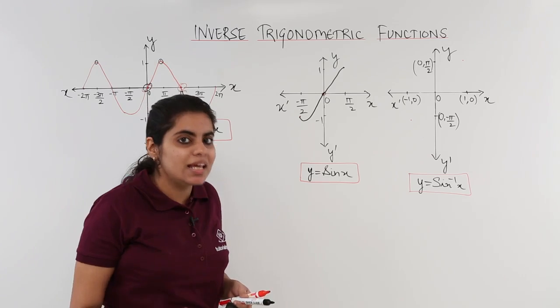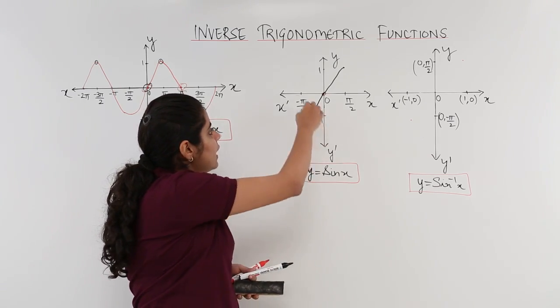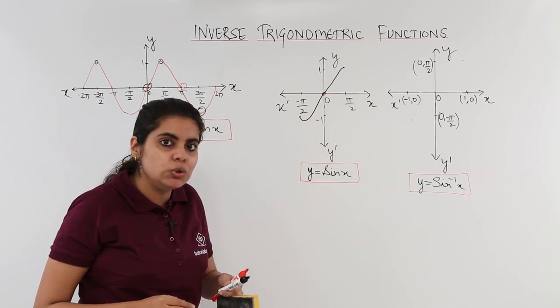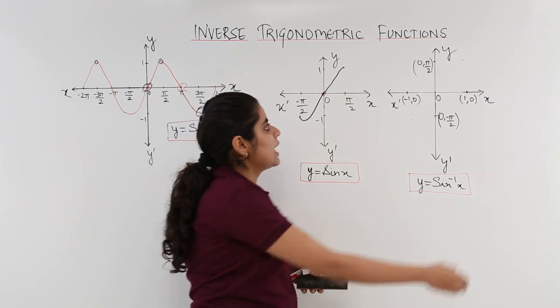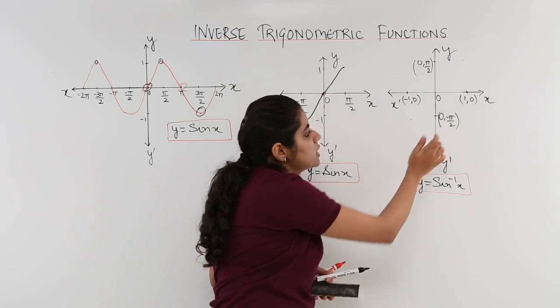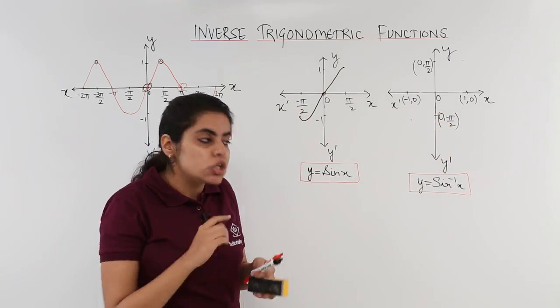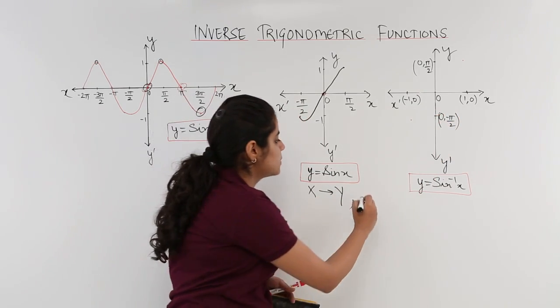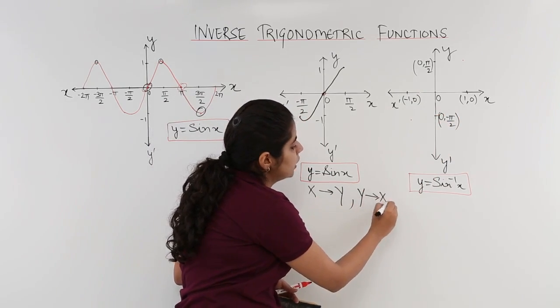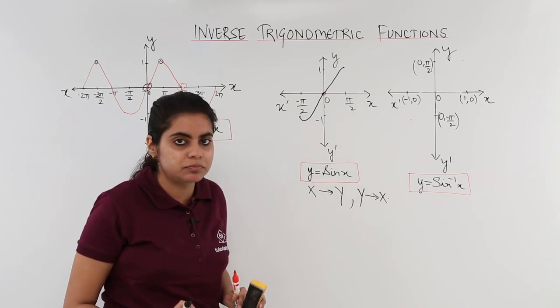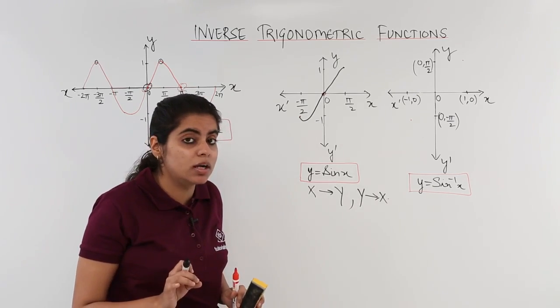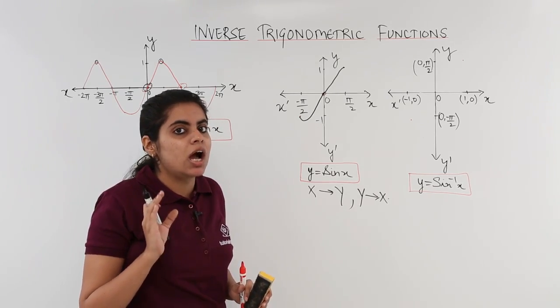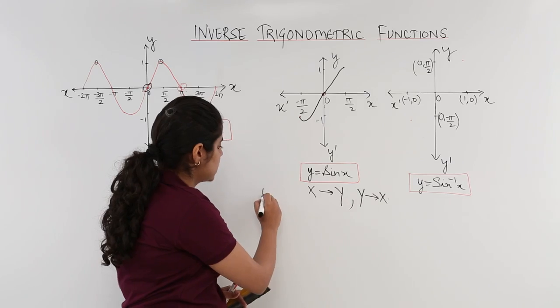What happens next? The next thing is nothing but as we have -π/2, 0, π/2 on the x-axis, you change it. You change it as π/2, 0, -π/2 on the y-axis. So, nothing but my x becomes my y and my y becomes my x. You just interchange for inverse. The first thing.